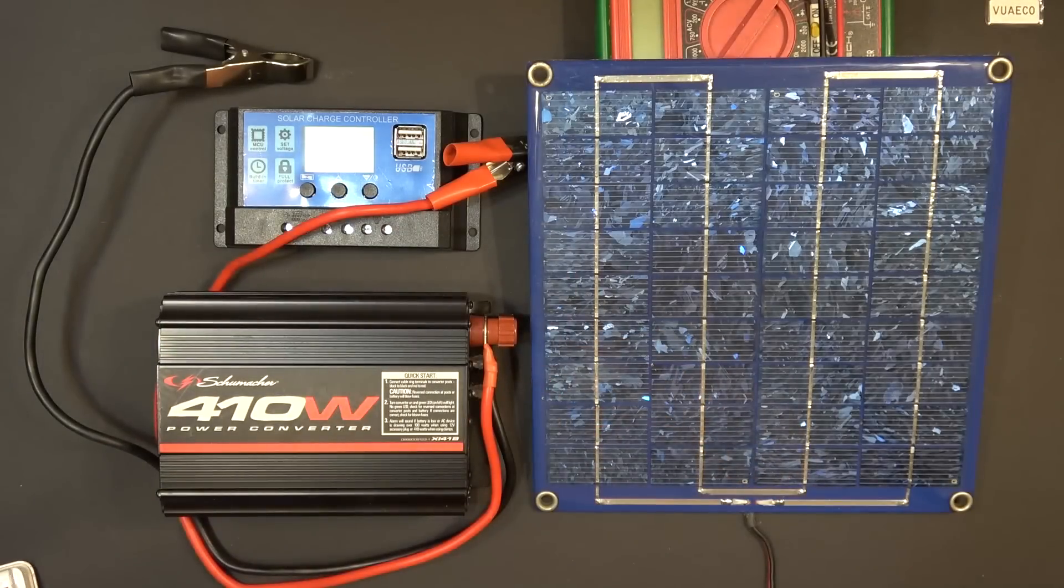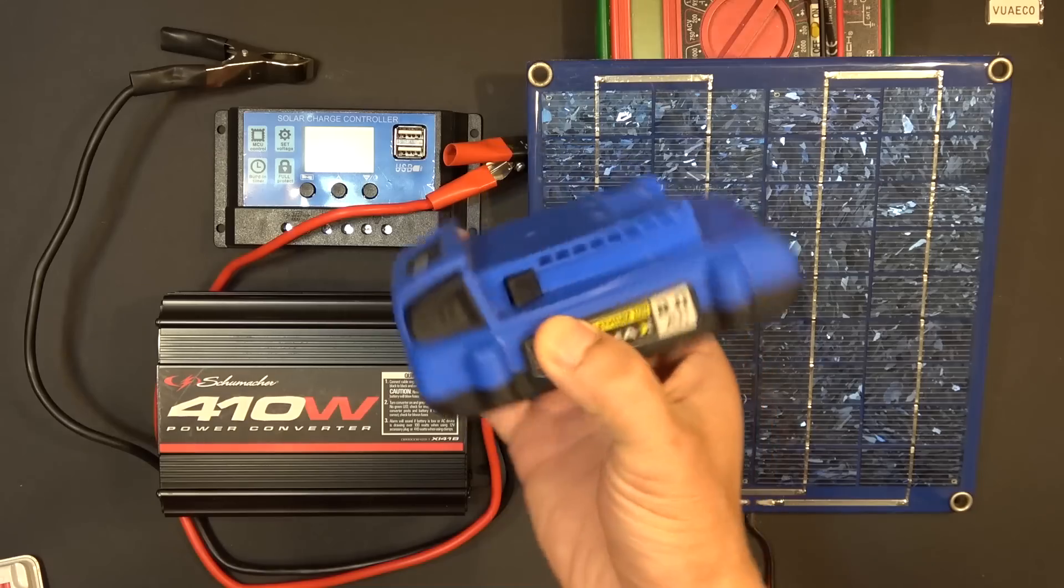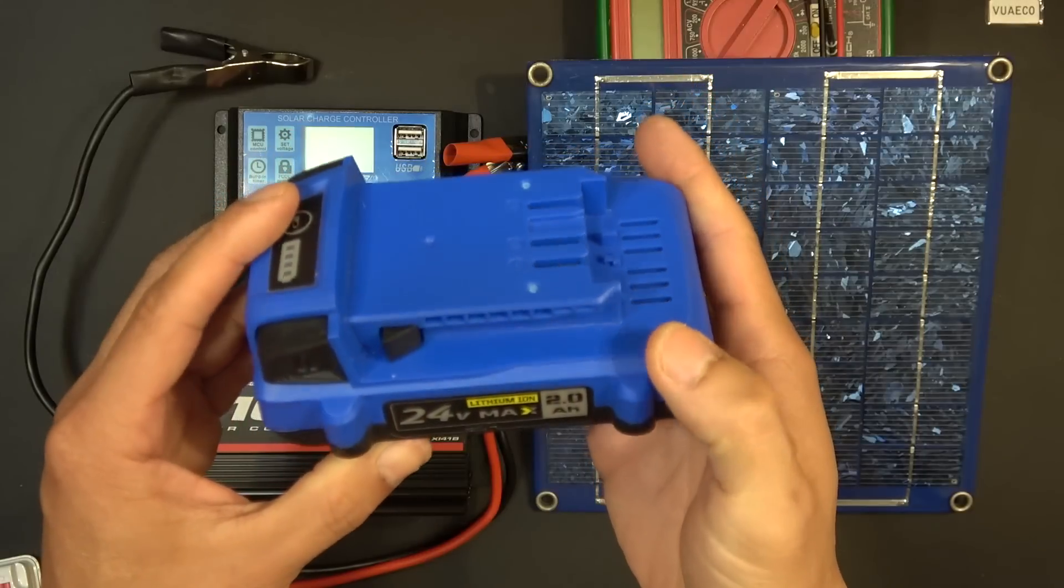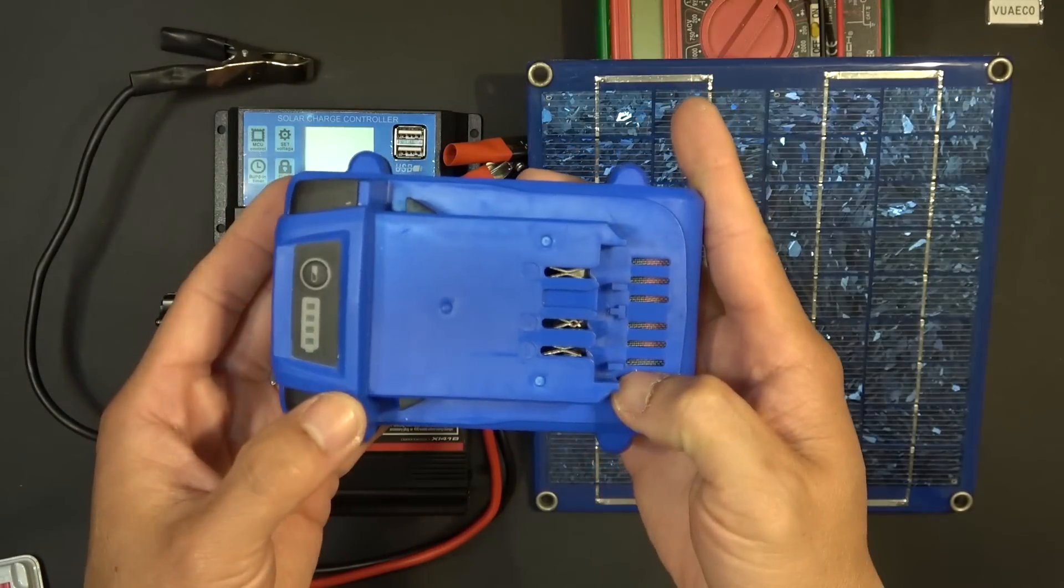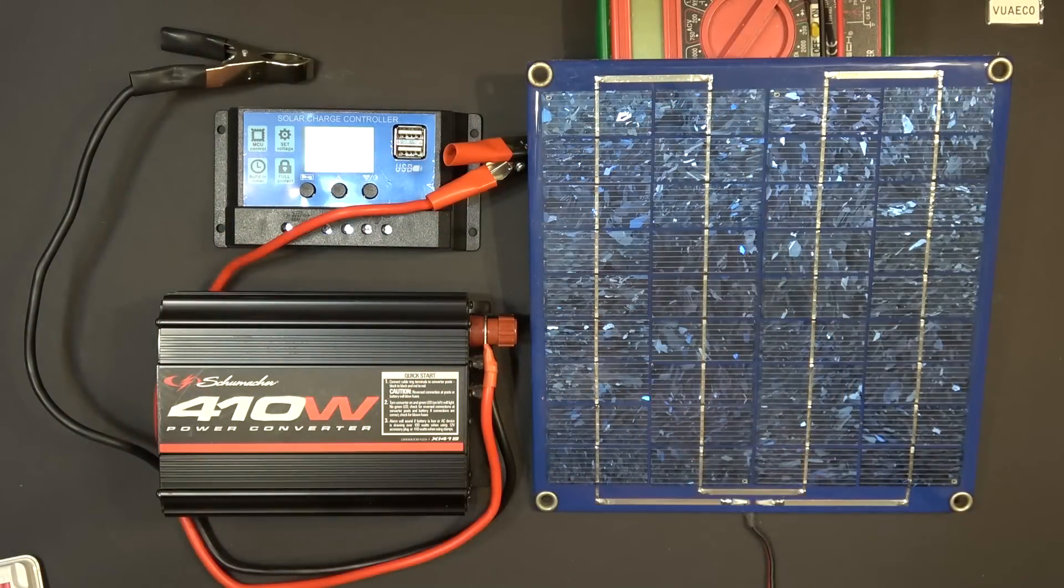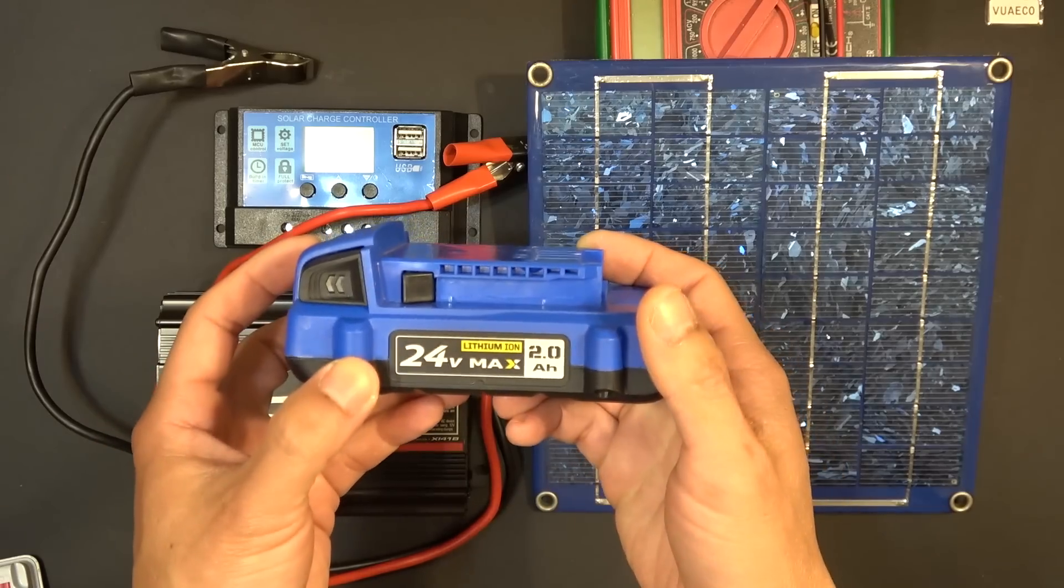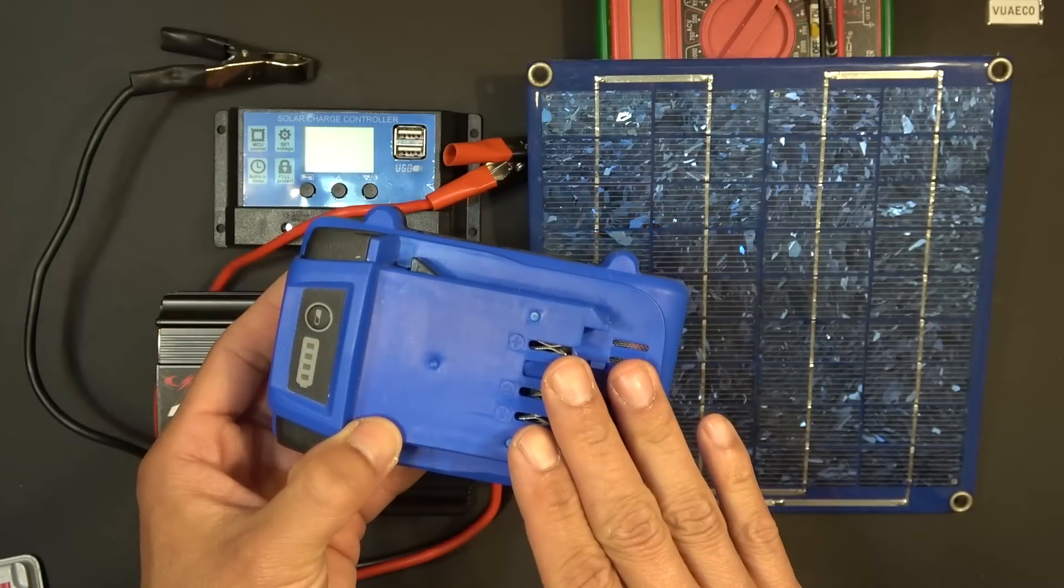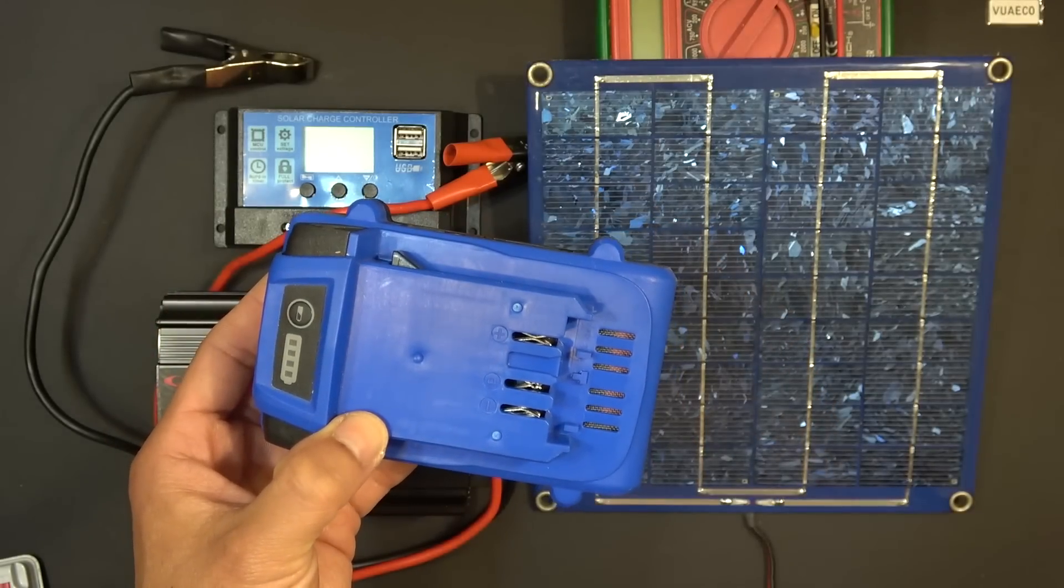And that's where this 24-volt power tool battery comes in. It's small and portable and it is powerful enough to handle the current this inverter can throw at it. The only problem is that it is 24 volts, but I will turn it into a 12-volt battery so I can use it for my solar power system.